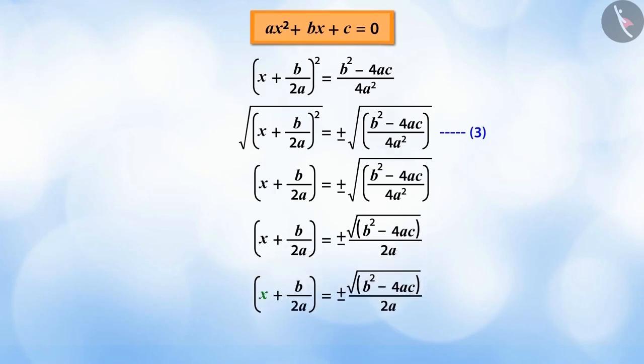Now, keeping the variable x to the left, the constant term b over 2a moved to the right side.